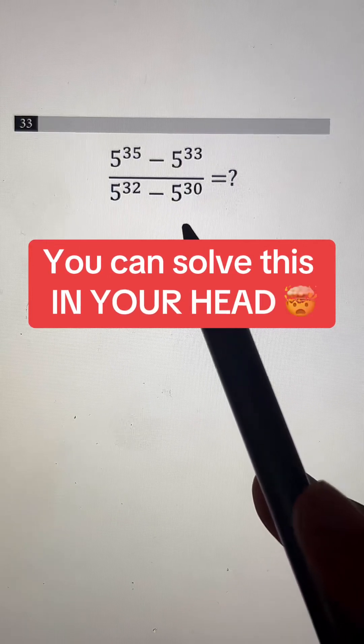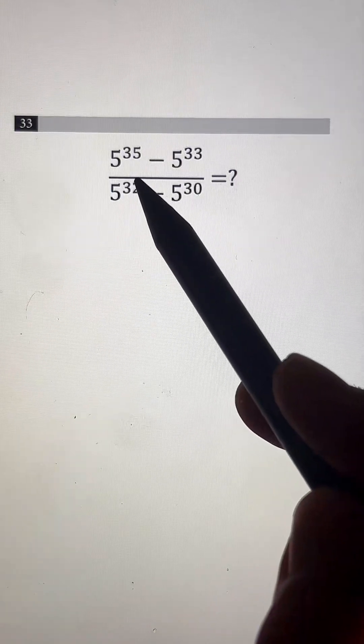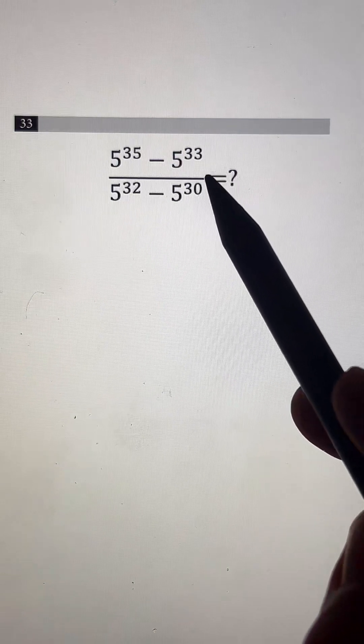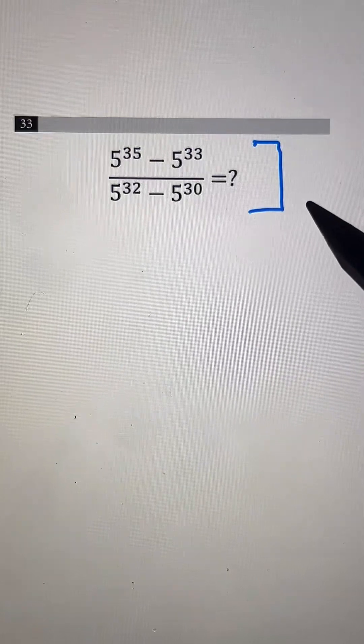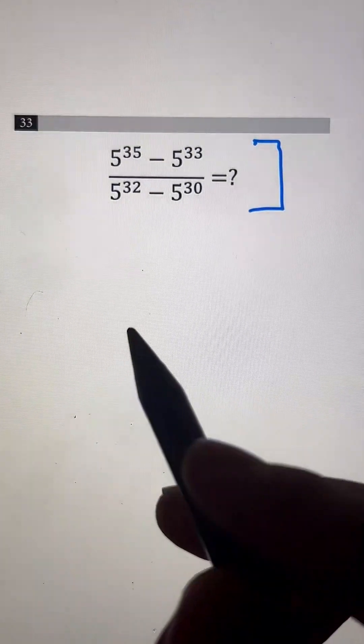Here's how to solve this ridiculous question inside of your head. 5 to the 35th power minus 5 to the 33rd power divided by 5 to the 32nd power minus 5 to the 30th power. Now these numbers right here are ridiculous, so we're going to have to factor it out to make it easier.